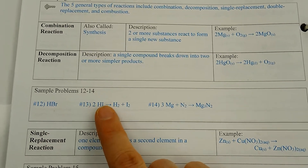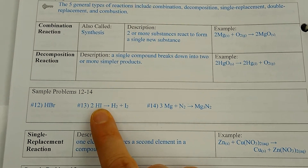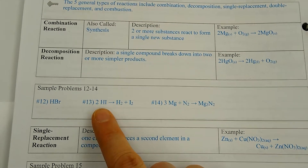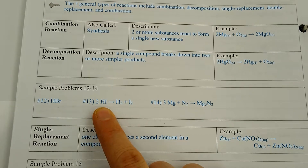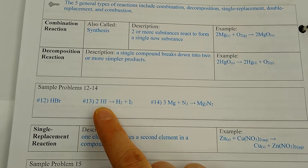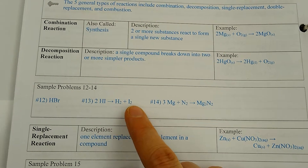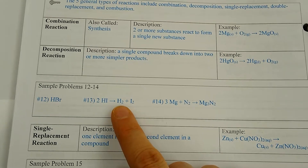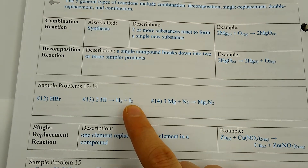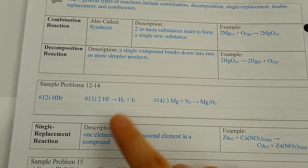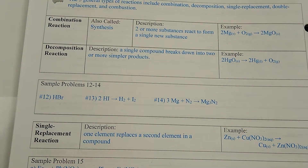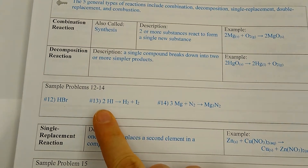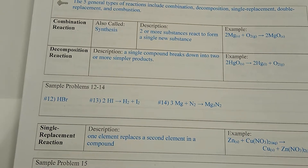Number 13 gave you HI before the arrow and wanted you to fill in the rest. If all you have before the arrow is HI, all it can do is fall apart into hydrogen and iodine. Remember, hydrogen and iodine are diatomic — anything that ends in 'gen' or '-ine' is diatomic in its pure form. Then we have to add a coefficient of 2 up front to balance the whole equation.